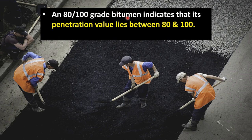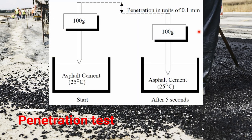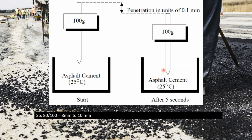An 80 by 100 bitumen indicates that its penetration value lies between 80 and 100. The penetration value can be obtained by the penetration test. The penetration test measures the hardness or softness of bitumen by measuring the depth to which a standard loaded needle will penetrate vertically in 5 seconds. So 80 by 100 grade bitumen means this needle will penetrate 8 mm to 10 mm in 5 seconds.